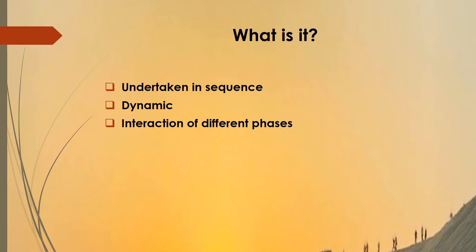A process is something where particular elements are undertaken in a sequence over time. When the first element is over, or when the first action is accomplished, then the next action begins. That is a process. The strategic management is also a process. It is a dynamic one, with no fixed beginning or end, because there is close interaction of different phases. The model of the strategic management process will better explain how this interaction works.